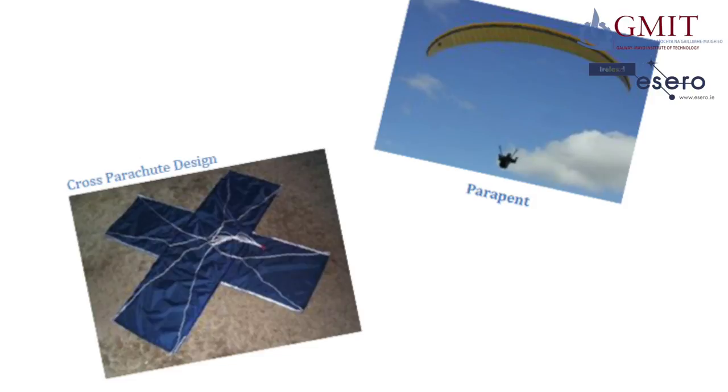A parapent shaped parachute acts a bit like a wing. Because of its shape you can use it to steer. The design of a parapent is more complex than the other shapes. You'll have to do a lot more research if you want to use this type.